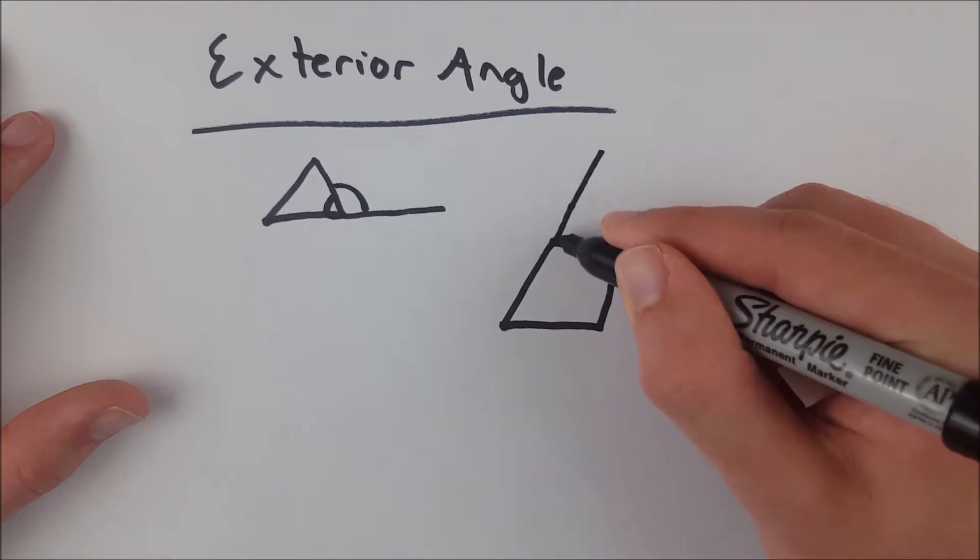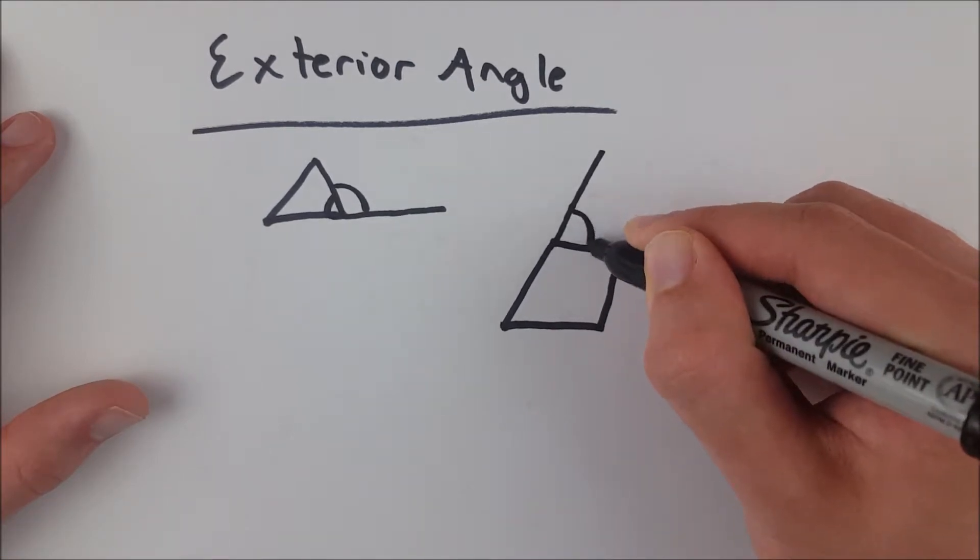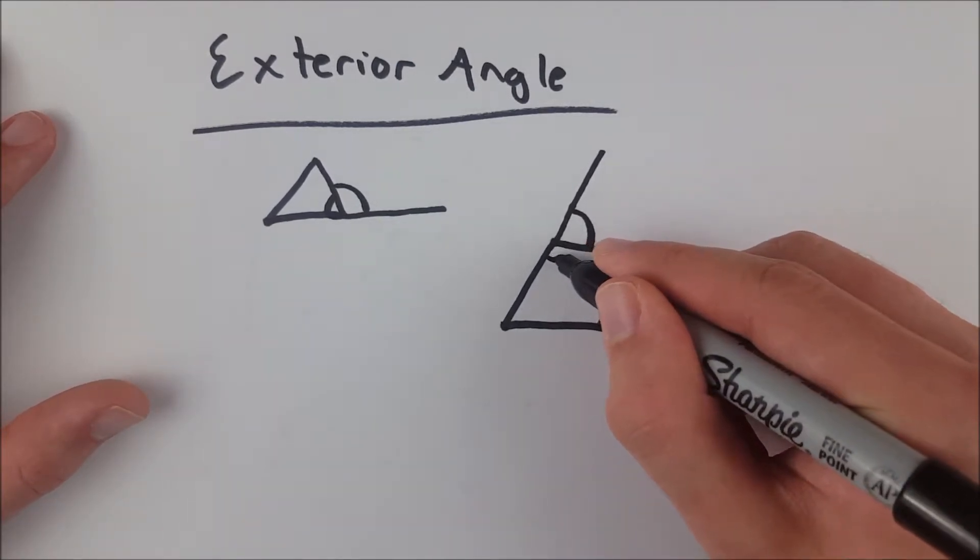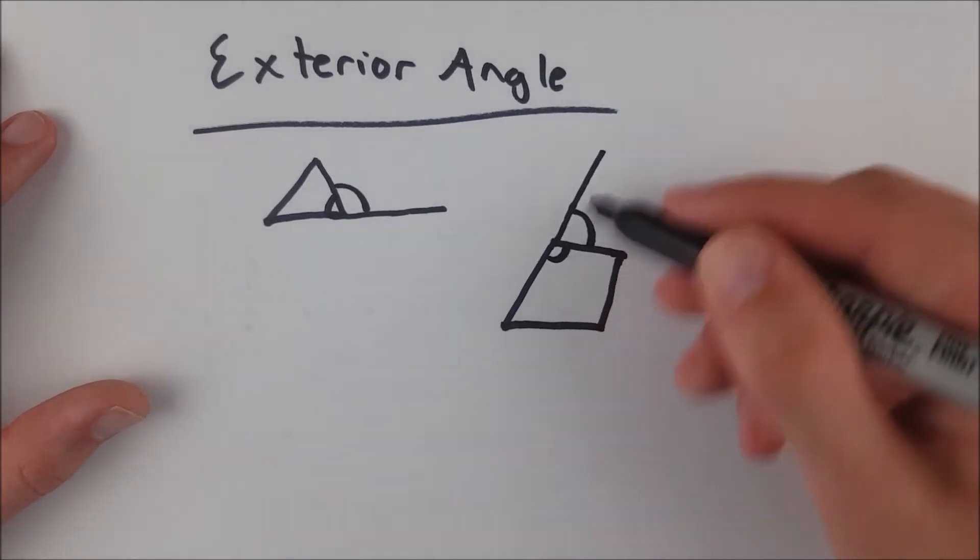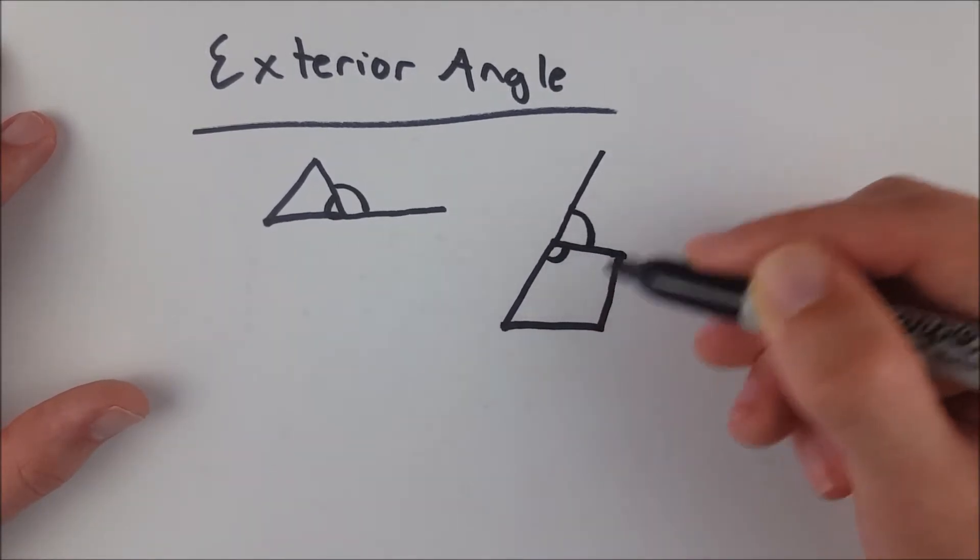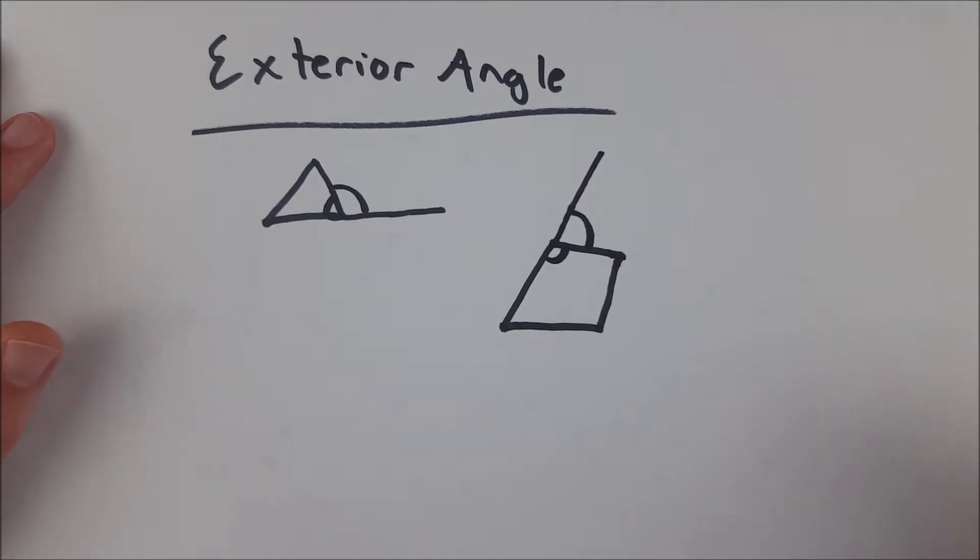From the line we extended and the adjacent side, it's right there. Again, this is our corresponding interior angle, and they are a linear pair. They form a line together. If you add their angle measures up, you would get 180, because they are supplementary.